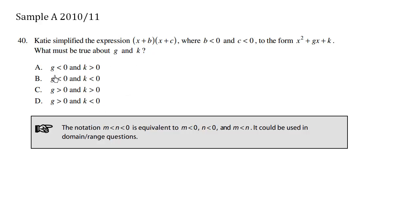We see the choices are basically g or k is less than or greater than 0. At first this question might seem a bit tricky, but when we think about it, we're simply expanding this using FOIL to result in this.